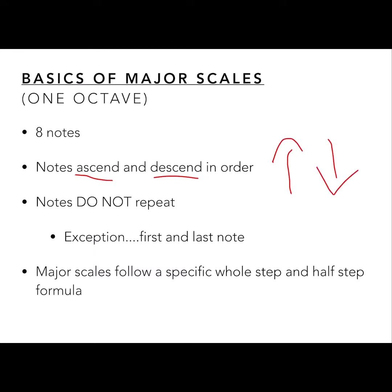If we know the musical notes that we have — A, B, C, D, E, F, G, and then we go back to A — any scale will follow that order of the musical alphabet. You don't skip notes; you actually go in order of those notes, whether you're going up the scale or down the scale. Notes in the scale do not repeat.